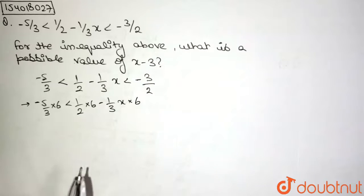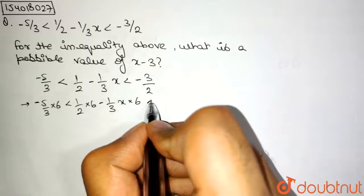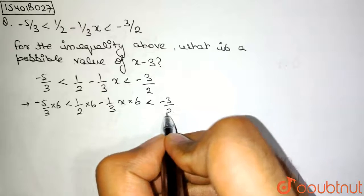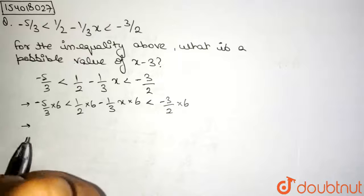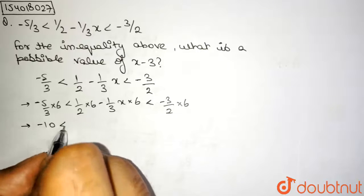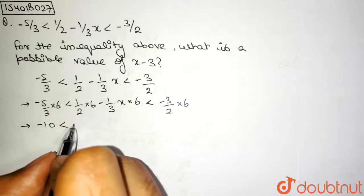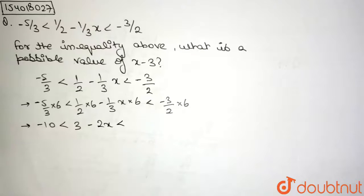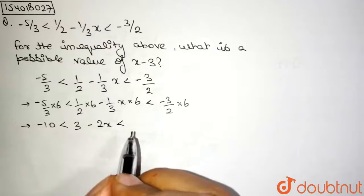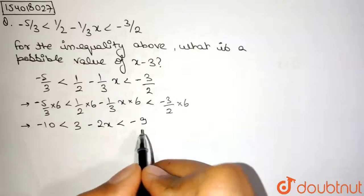I have opened the brackets for this one, which is less than minus 3 by 2 into 6. Now let us simplify this up. I have minus 10 is less than 3 minus 2x is less than minus 9.